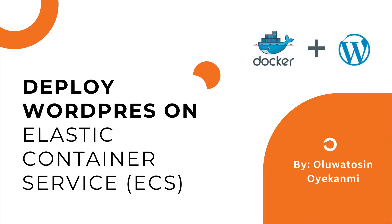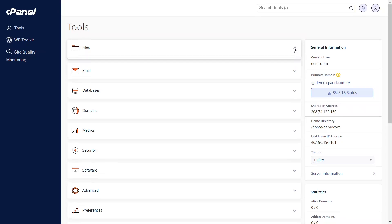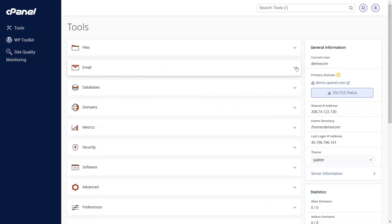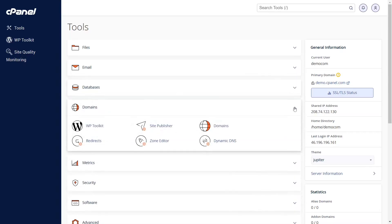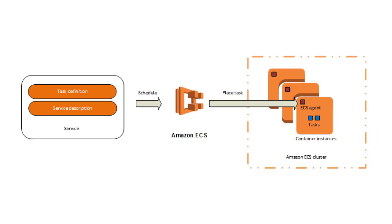Hello and welcome to another CSN demo. I am Holu Watusenyo Yekomi and today we'll be diving into the process of hosting a WordPress site on Amazon ECS. While many may choose to set up their WordPress site with tools like cPanel or on virtual machines, we'll be taking a more advanced approach, leveraging Amazon ECS for a scalable, flexible, and modern cloud environment. By the end of this demo, you'll have a clear understanding of how to deploy your WordPress sites on AWS ECS with ease.